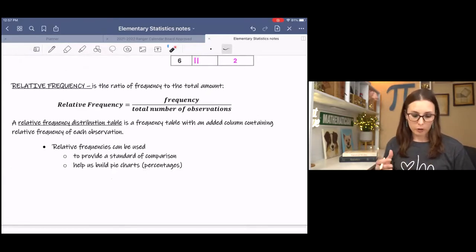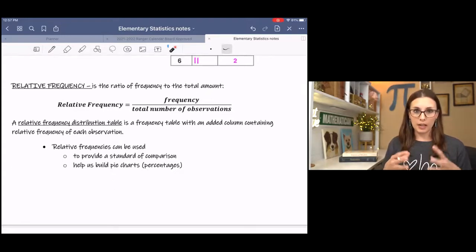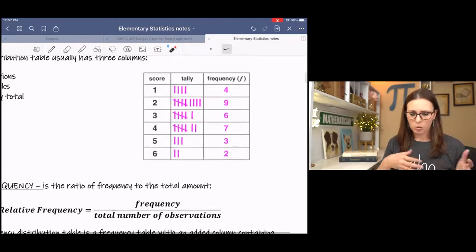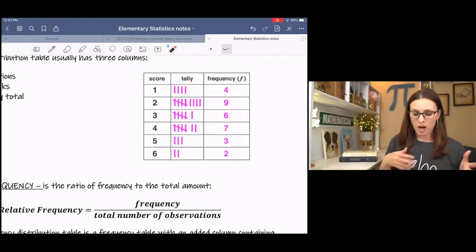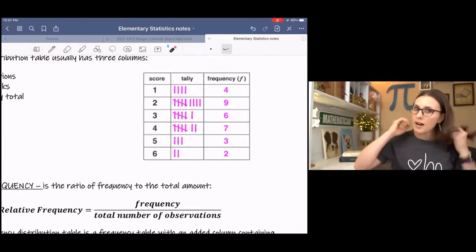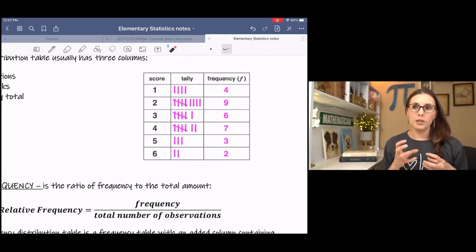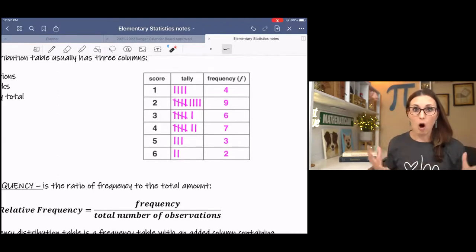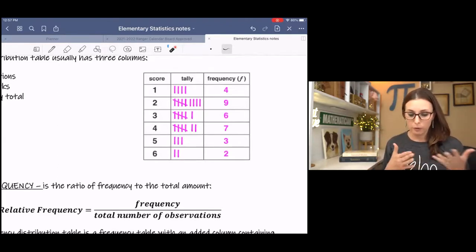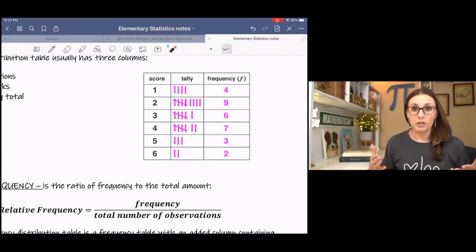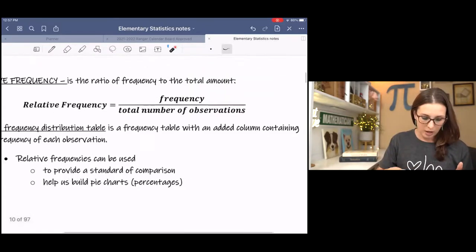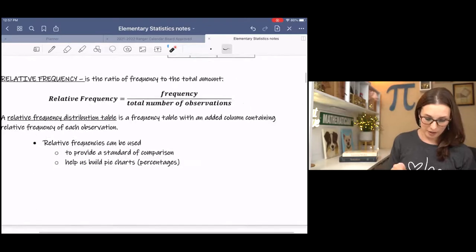And they're really useful because they can help us to provide a standard comparison. I talked about proportions. So instead of just seeing one occurred four times and two occurred nine times, if we added that extra column, that relative frequency column, it would tell us what proportion one represents out of all the observations. It would give us a piece of the pie, if you will, and it helps us build pie charts.